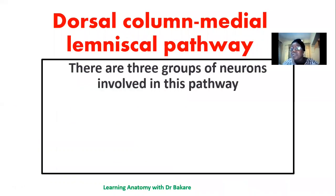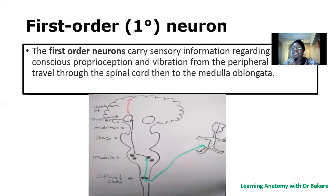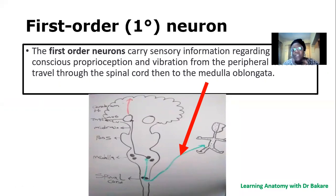The dorsal column medial lemniscal pathway is made up of three groups of neurons: the first order neuron, the second order neuron, and the third order neuron. There are three sets that run from one point, synapse, another picks it up, synapses again, and finally transmits to the cerebral cortex. The first order neurons carry sensory information from the peripheral region — the posterior region and the lower part of the body. They enter into the dorsal column of the spinal cord, ascend upward into the medulla, and do not synapse in the spinal cord. They further ascend and enter the medulla where they finally synapse.